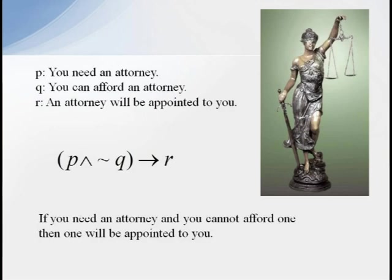Here's an example of a more complex compound statement. Let's let p represent that you need an attorney, q represent that you can afford an attorney, and r represent an attorney will be appointed to you. Then the statement, if p and not q, then r represents the new statement. If you need an attorney and cannot afford one, then one will be appointed to you.